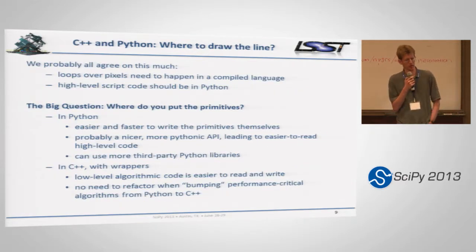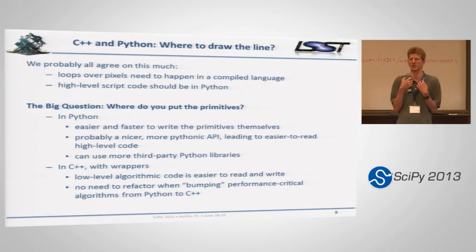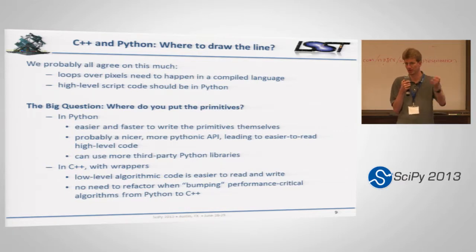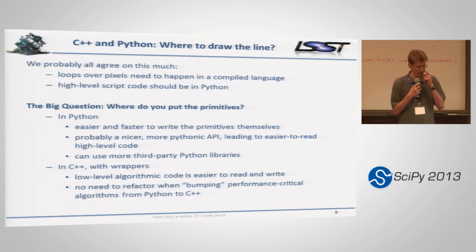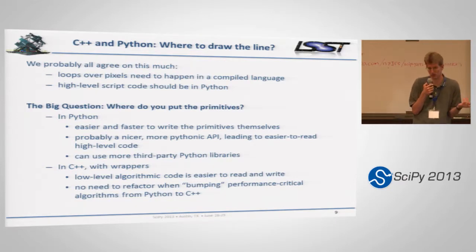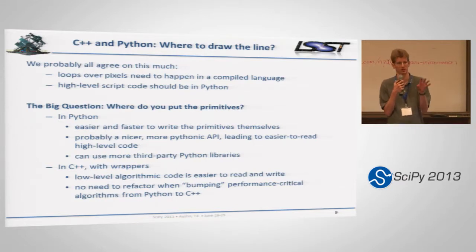Now I'm going to switch gears and talk about lessons learned and the trade-offs from the way we decided to develop things. Where the last speaker expected to have to defend the use of Python against C++ aficionados, I actually feel even more so in this crowd that I have to defend C++ against Python aficionados. But I think we can agree that something needs to make tight loops over pixels happen in some sort of compiled language — maybe that's Python that gets compiled, but you can't do it with regular interpreted Python. We all agree the high-level stuff needs to happen in Python. What we've done is put the primitives in C++.